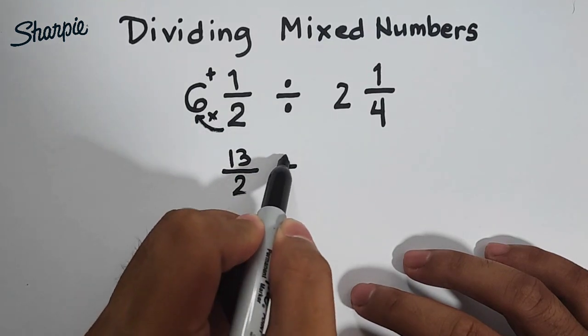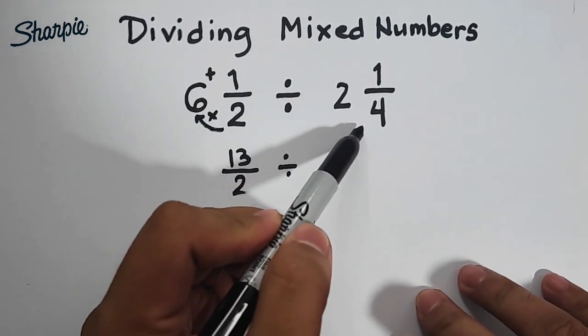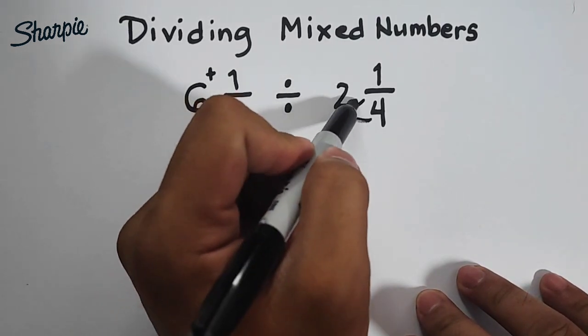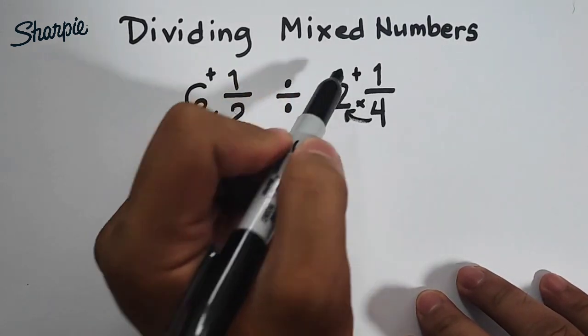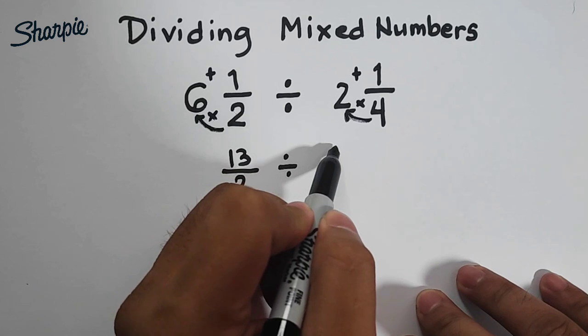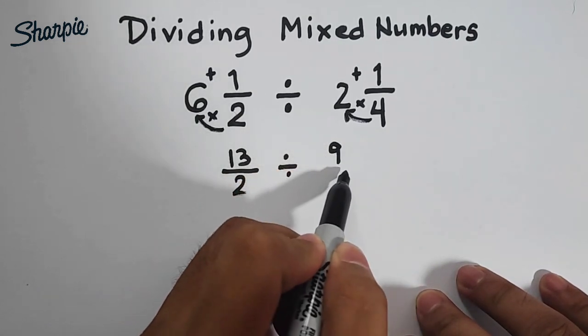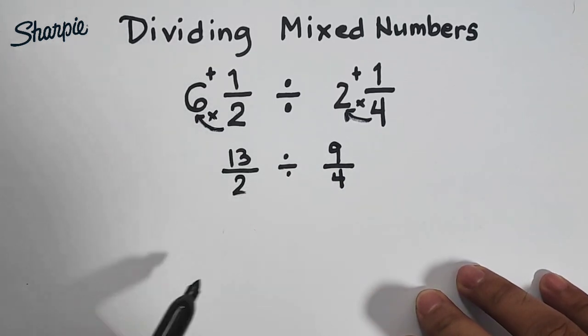Then divide it by, convert this into improper fraction, 4 times 2, that is 8, plus 1. That would give the answer of 9. Then copy your denominator, which is 4.